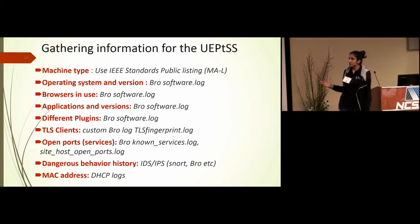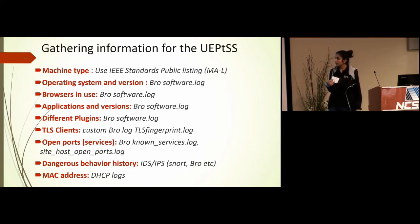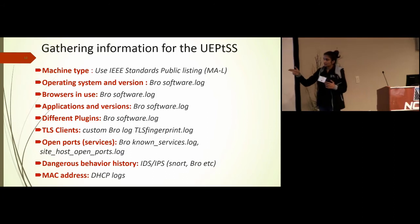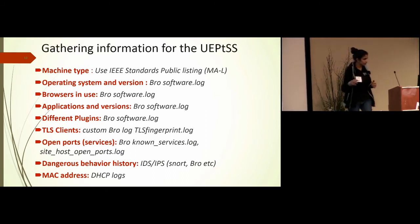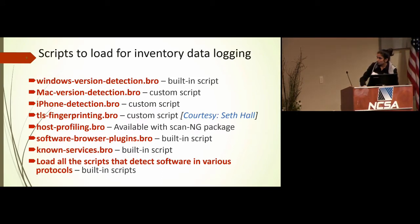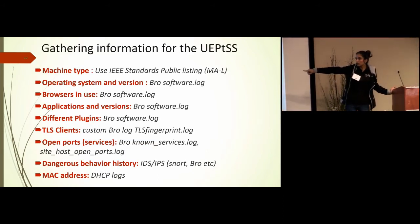Dangerous behavior history: if you have the Intel framework or Notice framework enabled in your Bro cluster, you can determine whether a host was a victim of some kind of attack in history. You can also use Snort alerts if you have Snort sensors running. For MAC addresses, we use DHCP logs because our Bro sensors are positioned where they cannot determine the exact MAC addresses of endpoints — all Bro logs are MAC addresses of switches or routers — so we pull actual MAC addresses directly from our DHCP servers.